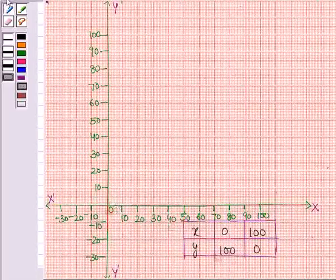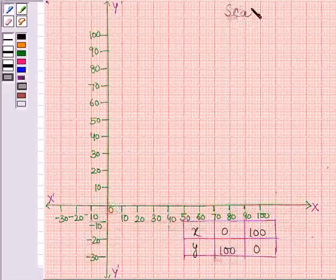And we are using the scale 1 centimeter is equal to 10 units. These are the two solutions which we have found out.